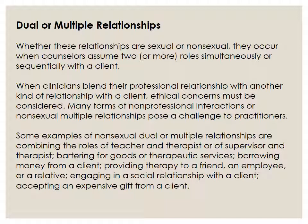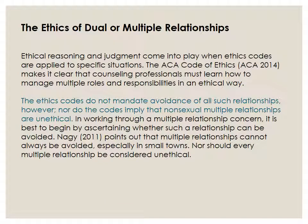Other examples include an employee or relative engaging in a social relationship with a client, or accepting an expensive gift from a client. Ethical reasoning and judgment come into play when ethics codes are applied to specific situations. The ACA Code of Ethics makes it clear that counseling professionals must learn how to manage multiple roles and responsibilities in an ethical way. The ethics codes do not mandate avoidance of all such relationships, nor do they imply that non-sexual multiple relationships are automatically unethical.